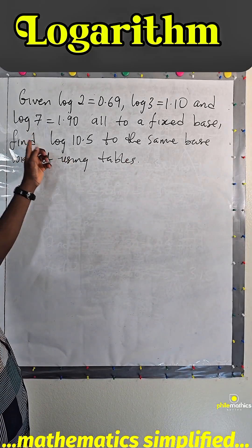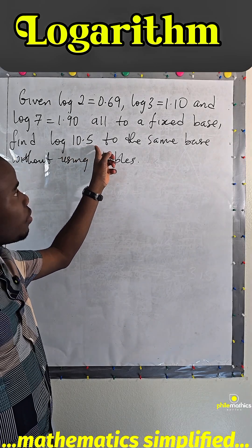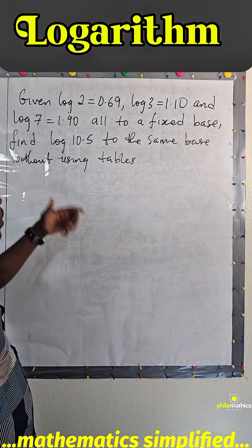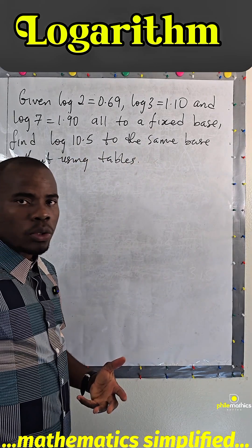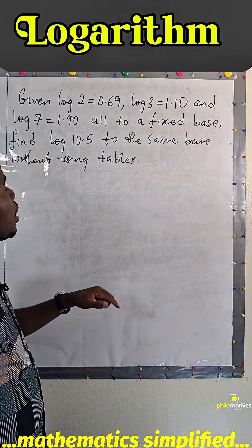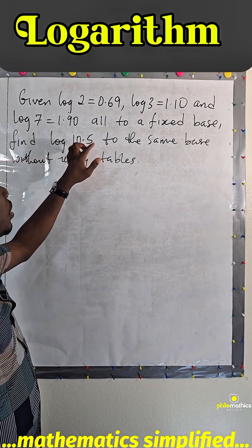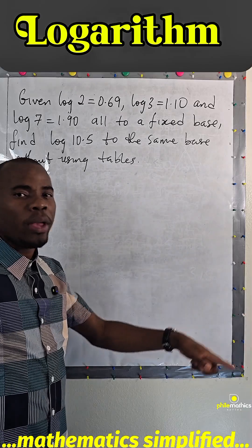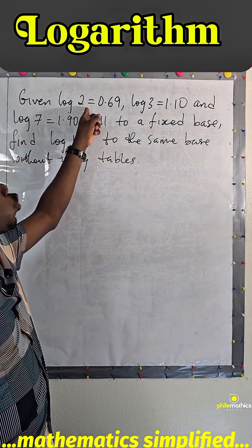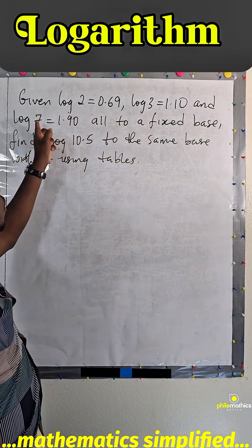We are asked to find log 10.5 to the same base without using tables. So the logic we use here is: how do you split 10.5 in such a way that we can factor in log 2, log 3, and log 7?